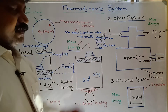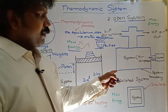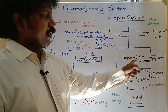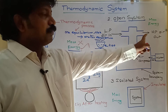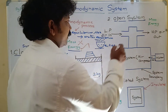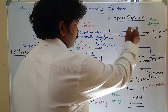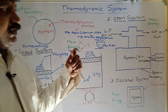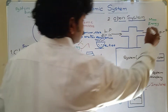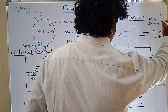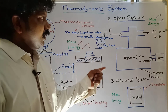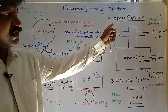In an open system, consider an air compressor. Low pressure air enters the compressor and, after compression by an external motor, high pressure air leaves the system. So mass transfer occurs and also heat energy transfers to the surroundings — both mass and heat energy transfer will occur.